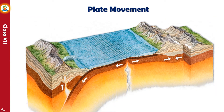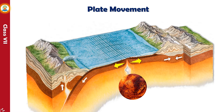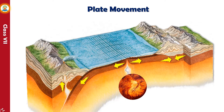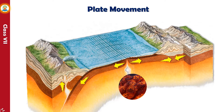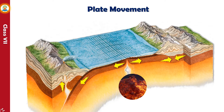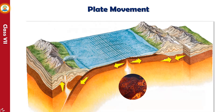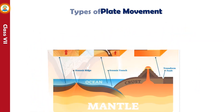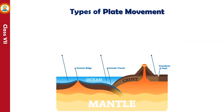Lithospheric plates are constantly in motion because tremendous heat generated inside the core of the earth causes the rocks in the mantle to melt. These molten rocks expand, rise, and push the plates away from each other. There are three types of plate movements.